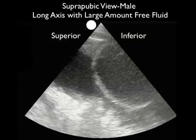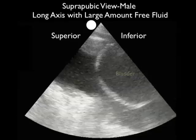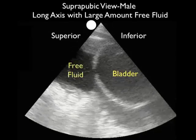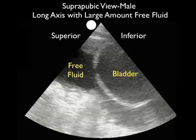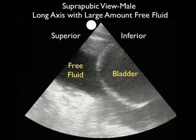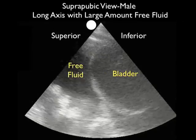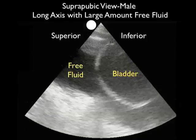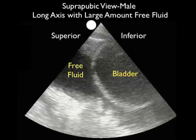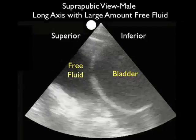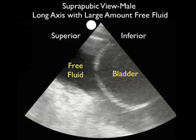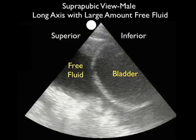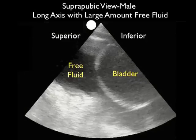Here we're scanning a male trauma patient with a long axis configuration, and we see a large amount of free fluid within the pelvis. We note the bladder inferiorly, and all the free fluid layering out both posterior to the bladder in the retrovesical space and coming anteriorly onto the dome of the bladder. So a large amount of free fluid in this male trauma patient.